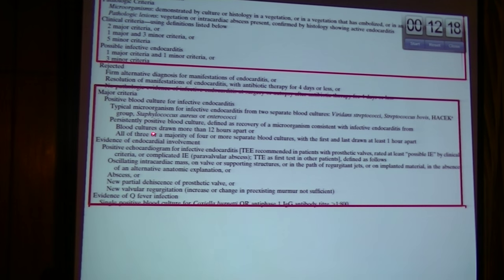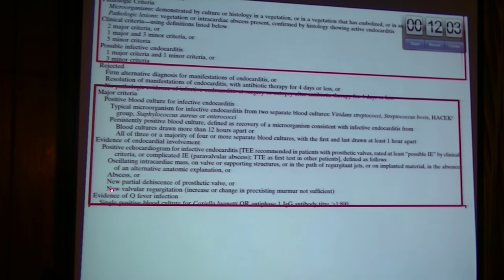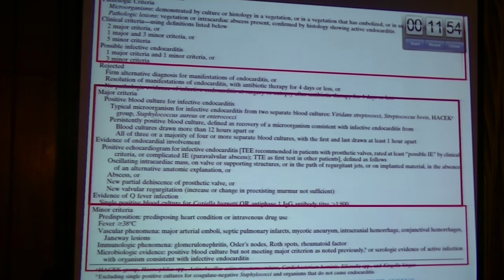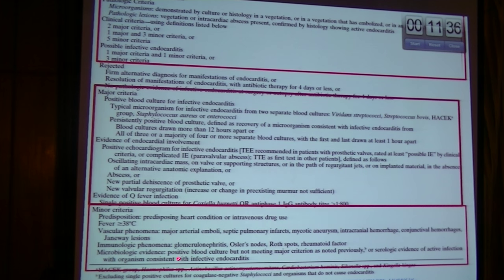The major criteria for infective endocarditis include positive blood culture and evidence of endocardial involvement by transesophageal echocardiography showing vegetation, abscess, and so forth, or evidence of other infections including Q fever with Coxiella burnetii. Minor criteria include predisposing heart condition, fever equal to or more than 38 degrees, vascular phenomena, immunologic phenomena, or microbiological evidence of bacterial endocarditis.